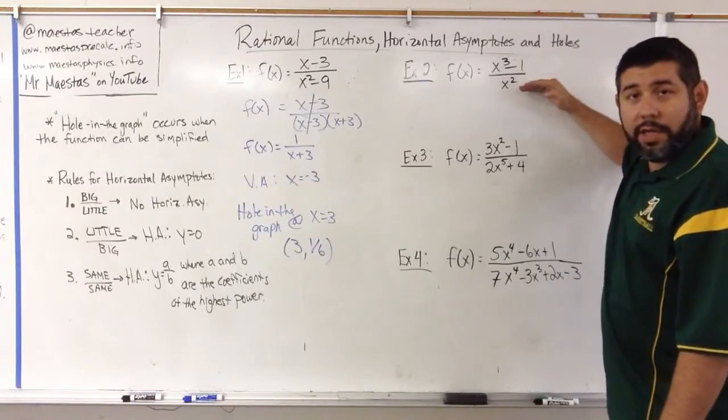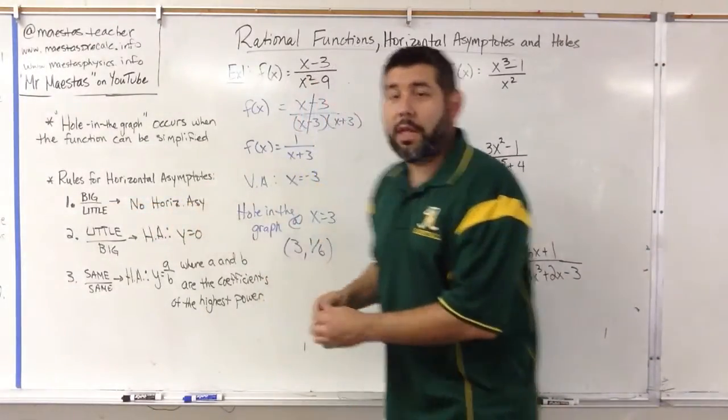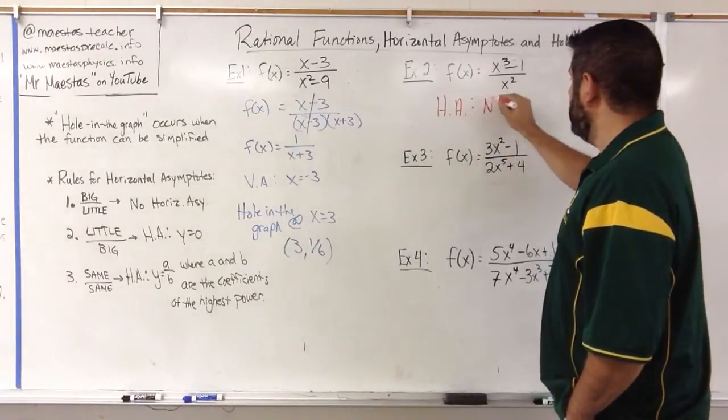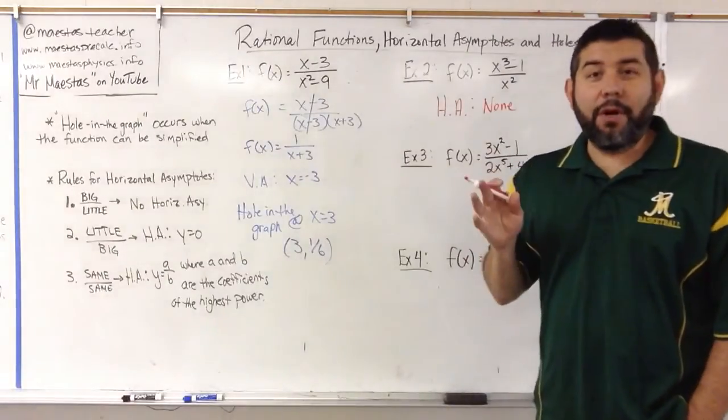Big over little. Big over little. No horizontal asymptote. So we would just say none, not applicable, doesn't have one. We move on.